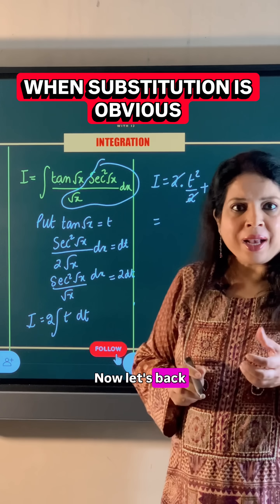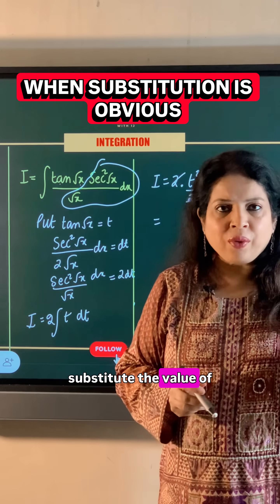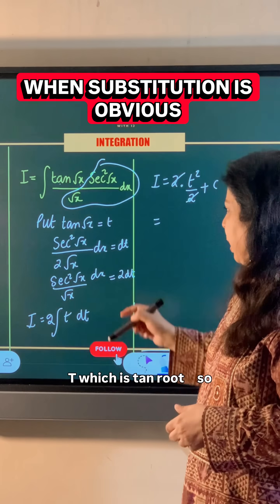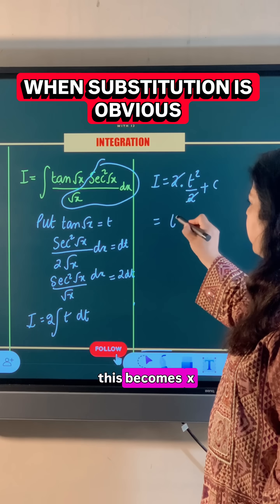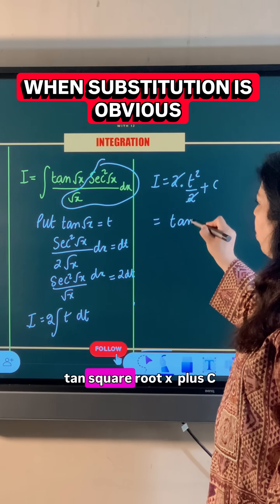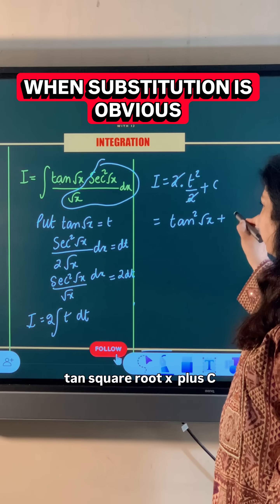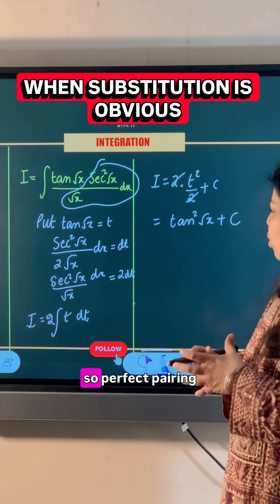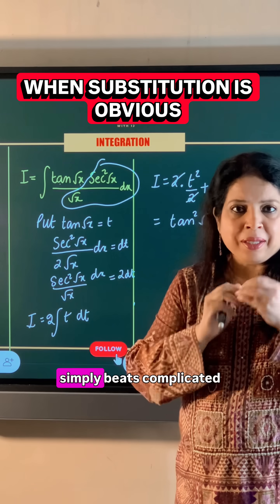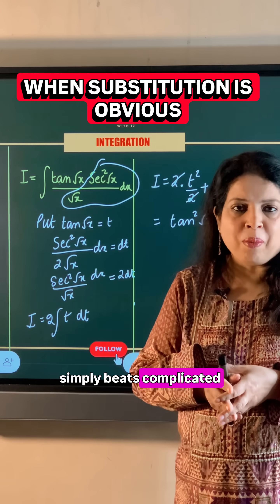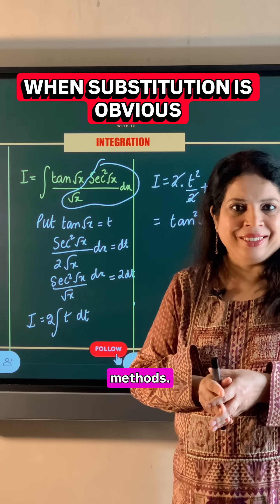Now back-substituting the value of t, which is tan(√x), this becomes tan²(√x) + C. So perfect pairing simply beats complicated methods.